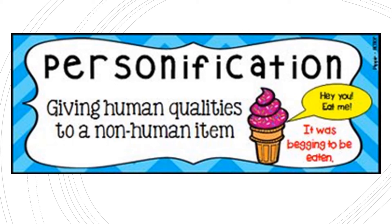The same applies when we say, 'the sun is smiling from the heavens.' It doesn't literally mean that the sun has got a big smile. It means that it might be very hot, and that's why you say the sun is smiling from the heavens.